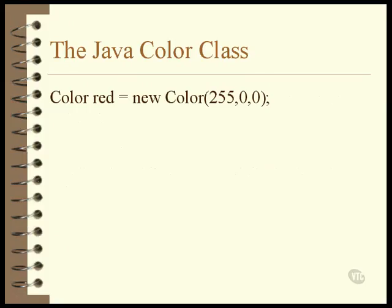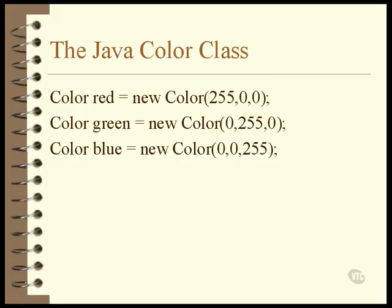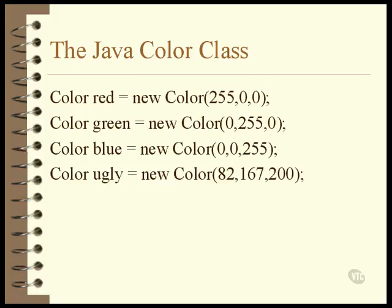The constructor of the color class requires that all three colors be specified. In this example, the color red is created by specifying the red component to be at its maximum and the green and blue components to be completely turned off. The green color object could be constructed the same way with red and blue turned completely off and the green component set to its maximum, and blue works the same way.